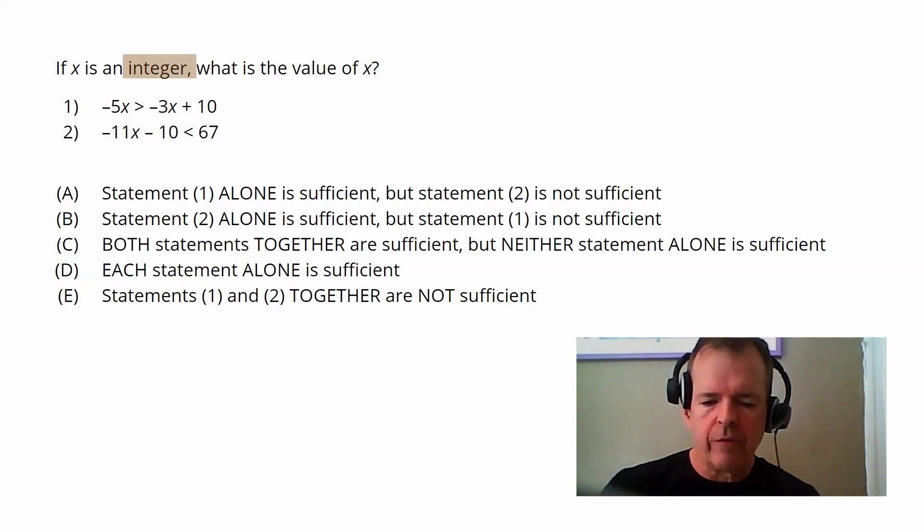So they want the value of X. So when they say value of X, they're looking for a specific single value. And now we know it's an integer. So we're looking for something like three, four, five, whatever.